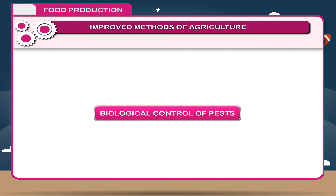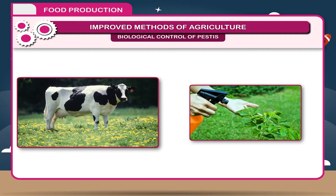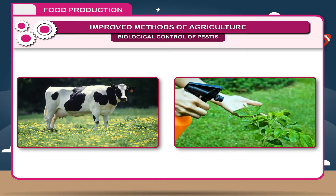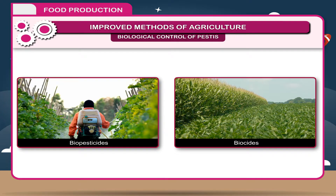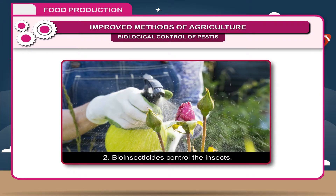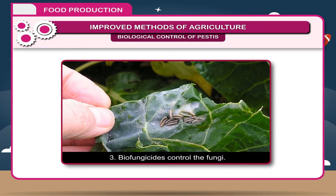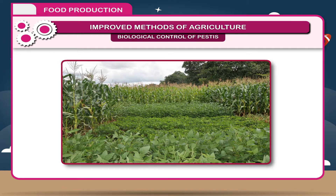Biological control of pests. Due to harmful effects of pesticides on organisms, some alternative methods of pest control are being used nowadays. The use of other organisms to kill the pests is called biological pest control. These organisms are called bio-pesticides or biocides. They may be: 1. Bio-herbicides — control the herbs. 2. Bio-insecticides — control the insects. 3. Bio-fungicides — control the fungi.